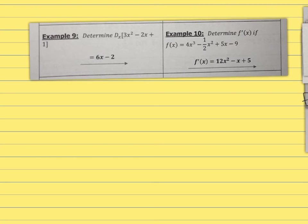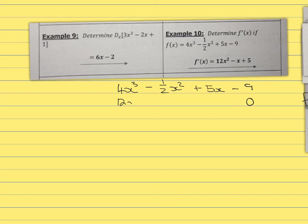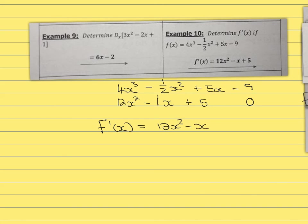The next example: determine the derivative of f(x) if f(x) equals 4x to the power 3 minus one half x squared plus 5x minus 9. The 9 we know will be 0 because there is no variable. So the derivative of f(x) equals 12x squared minus x plus 5.